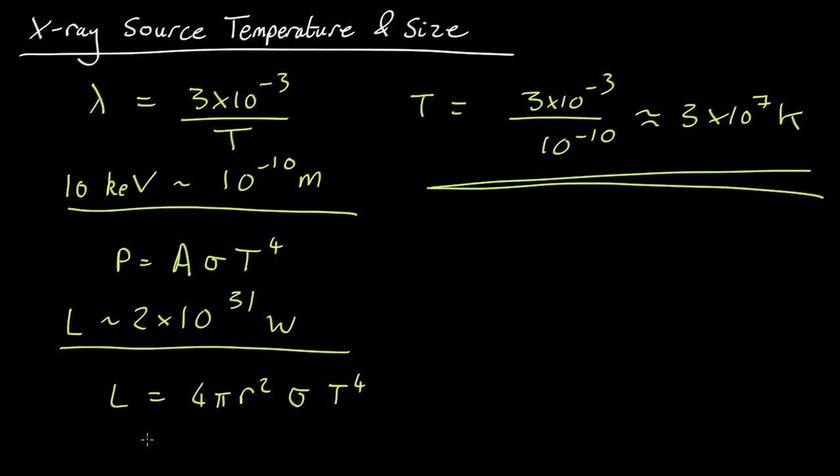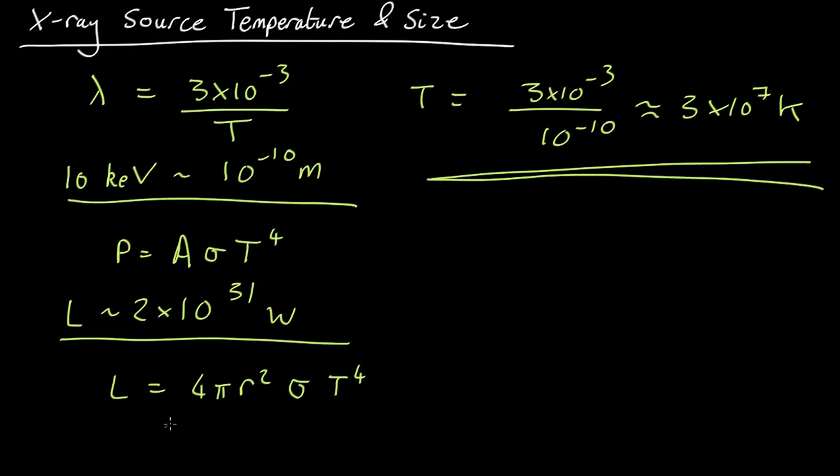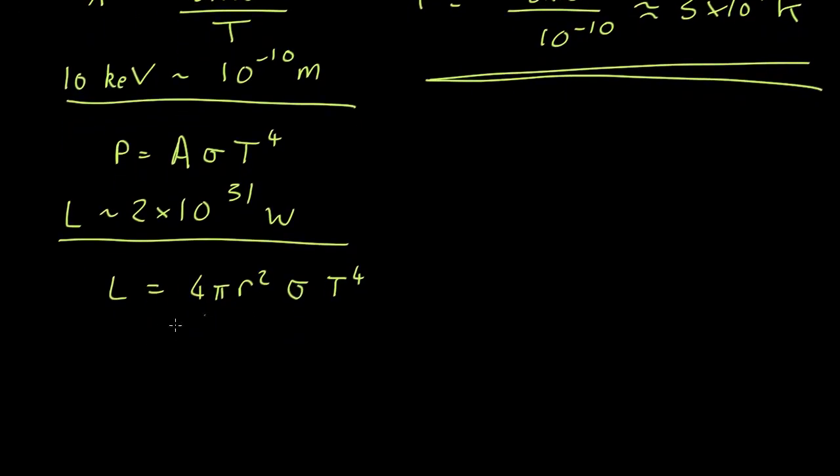So from this we can work out the radius of this object. Again, assuming it's a sphere. So what we can do is we get that R squared equals L over 4 pi sigma T to the 4th. Take the square root of both sides and we find that R equals square root of L over 4 pi sigma T to the 4th.